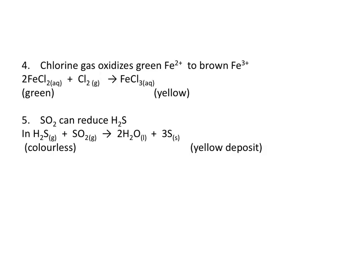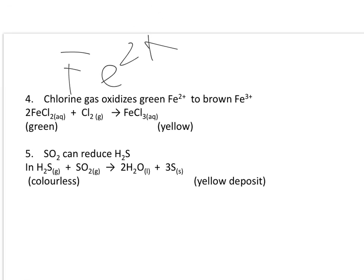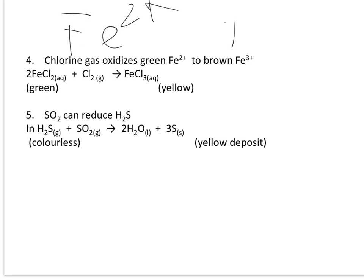Number 4: chlorine gas oxidizes green Fe²⁺ to brown Fe³⁺. The equation is: 2FeCl₂ + Cl₂ → 2FeCl₃. Fe²⁺ has a green color and Fe³⁺ has a yellow color, so the change in oxidation state from +2 to +3 also means a change in color from green to yellow.